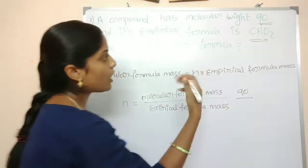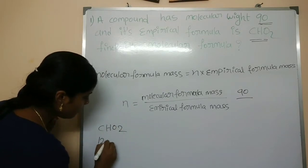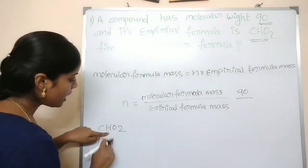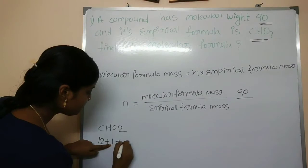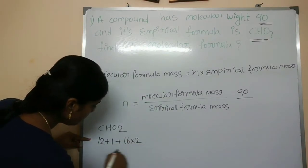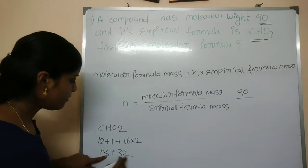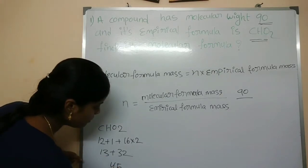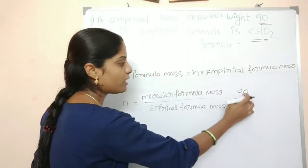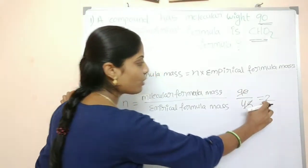We will find the formula. CHO2 has a formula mass of 45. So N is equal to 90 divided by 45, which gives us N equal to 2.